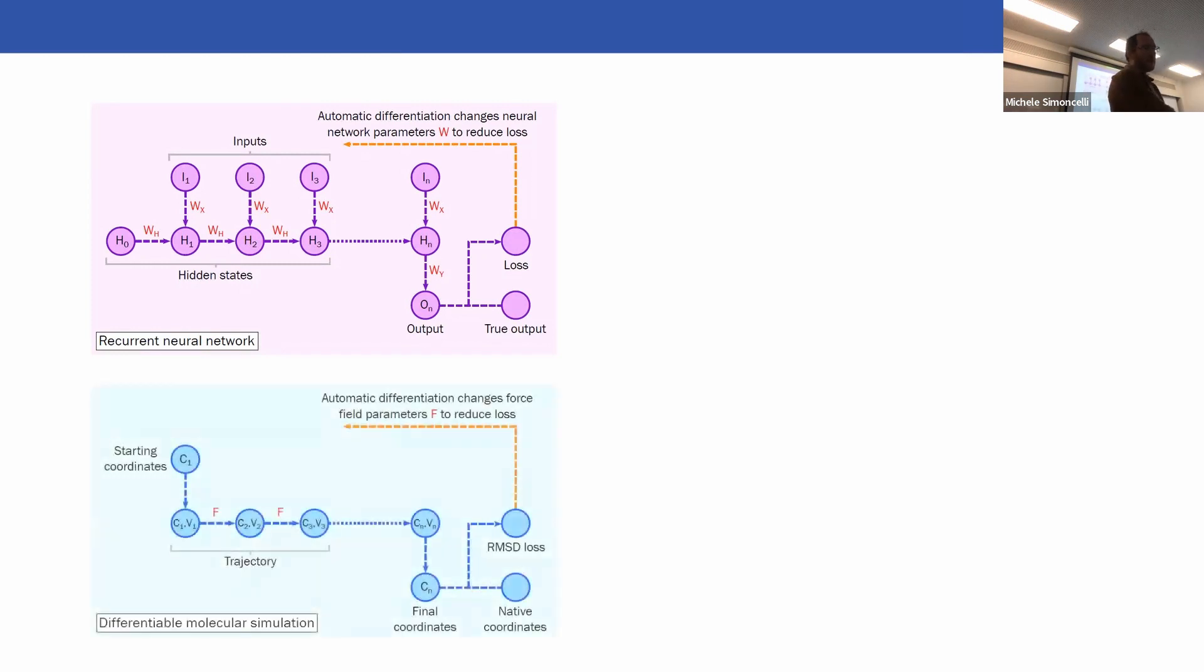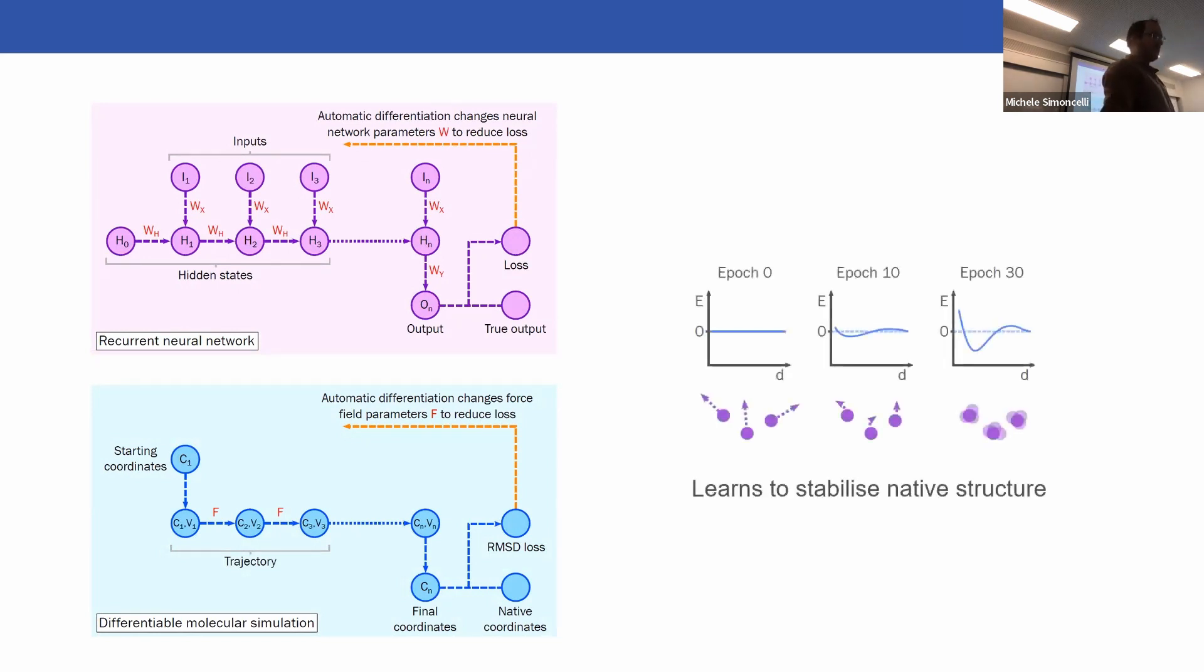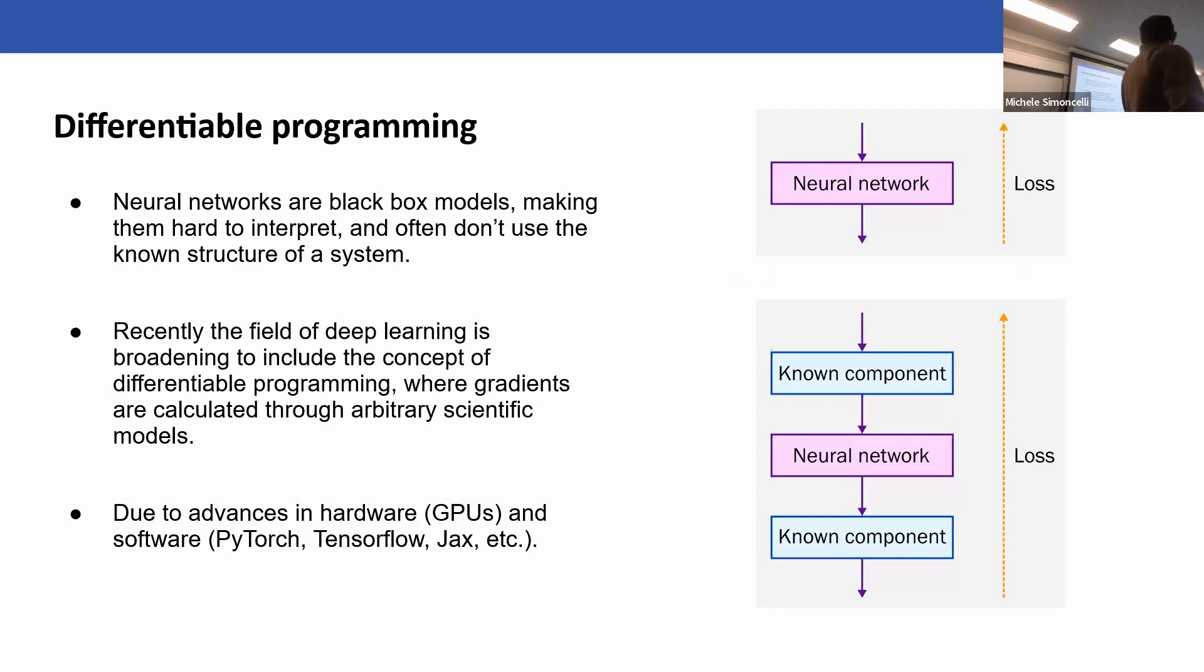Differentiable simulation is an analogous idea. You have your starting coordinates, a trajectory, then final coordinates. You calculate some loss, for instance the root mean square displacement to a native structure. Then you do exactly the same thing - get the gradient of that loss with respect to the parameters of the force field. At epoch zero, if your potential is flat, atoms will fly into space according to their starting velocity. But over a few epochs, if your training seeks to stabilize native structures, you'll learn a potential to keep atoms where they are. And you hope that potential is physically meaningful.